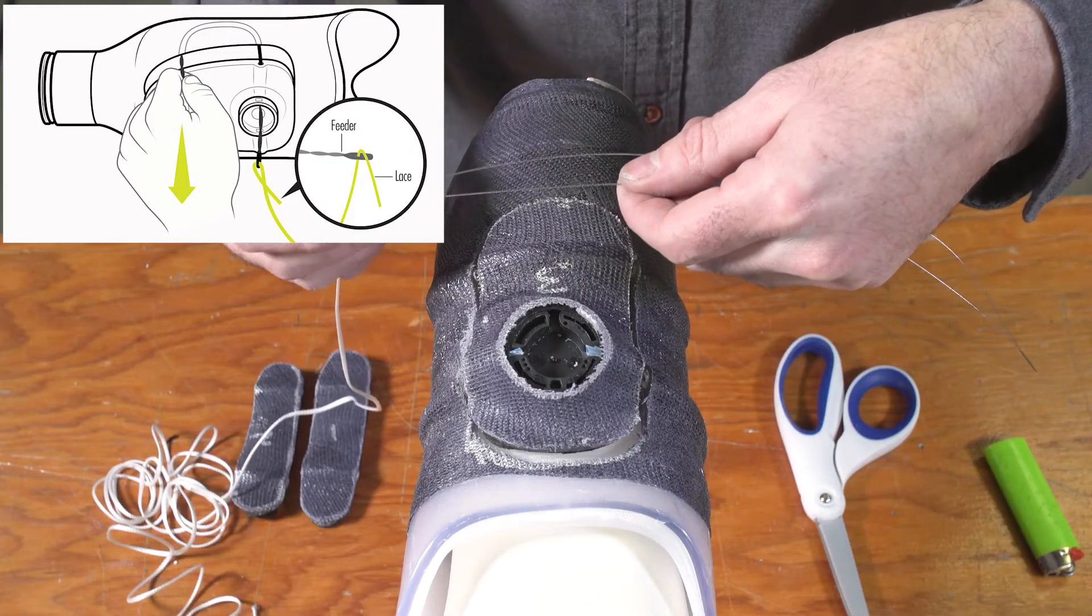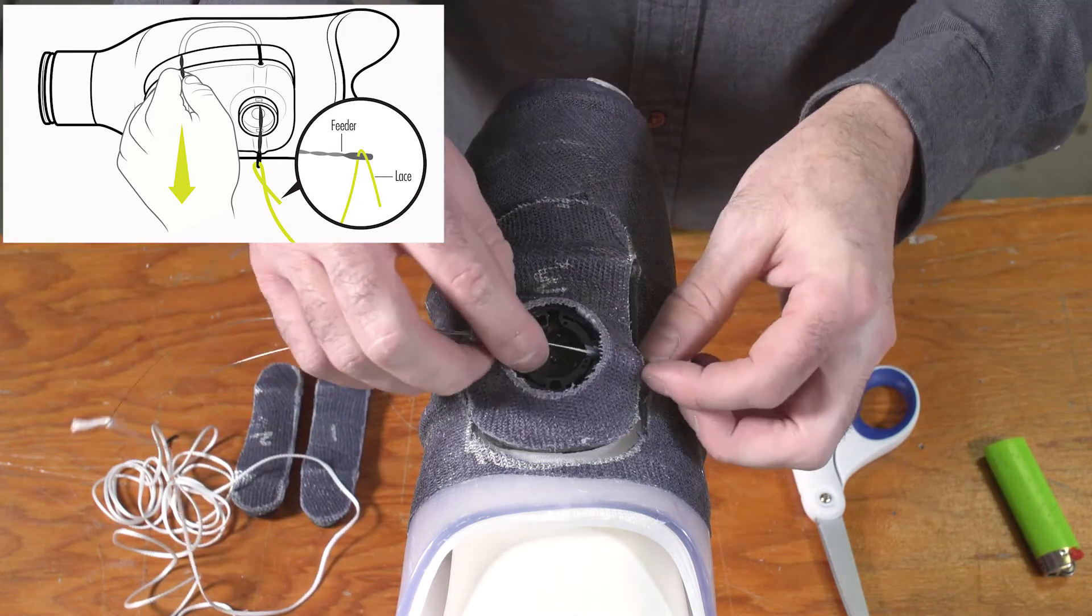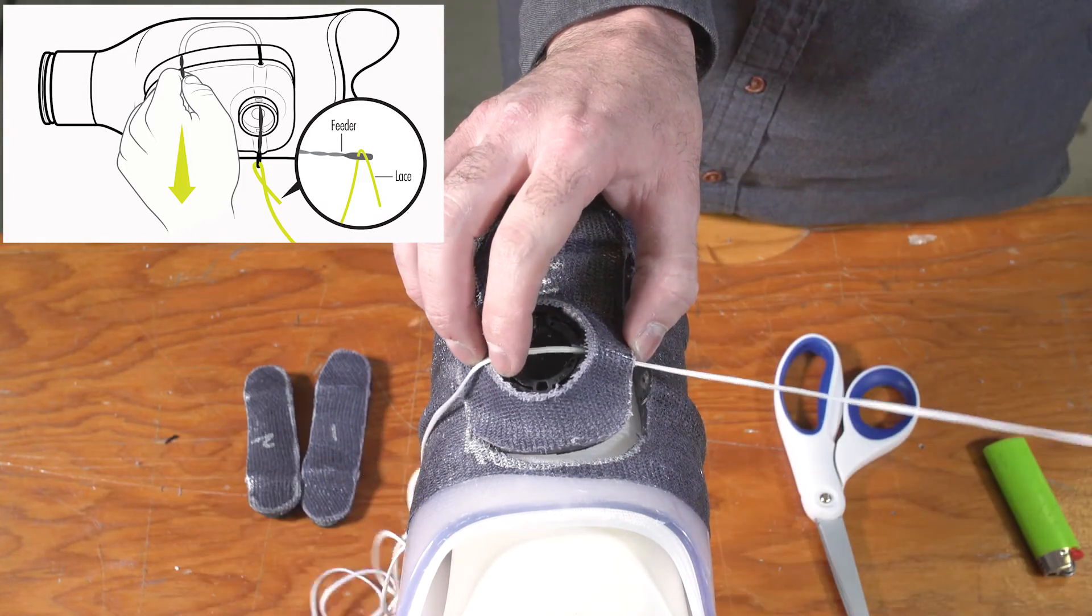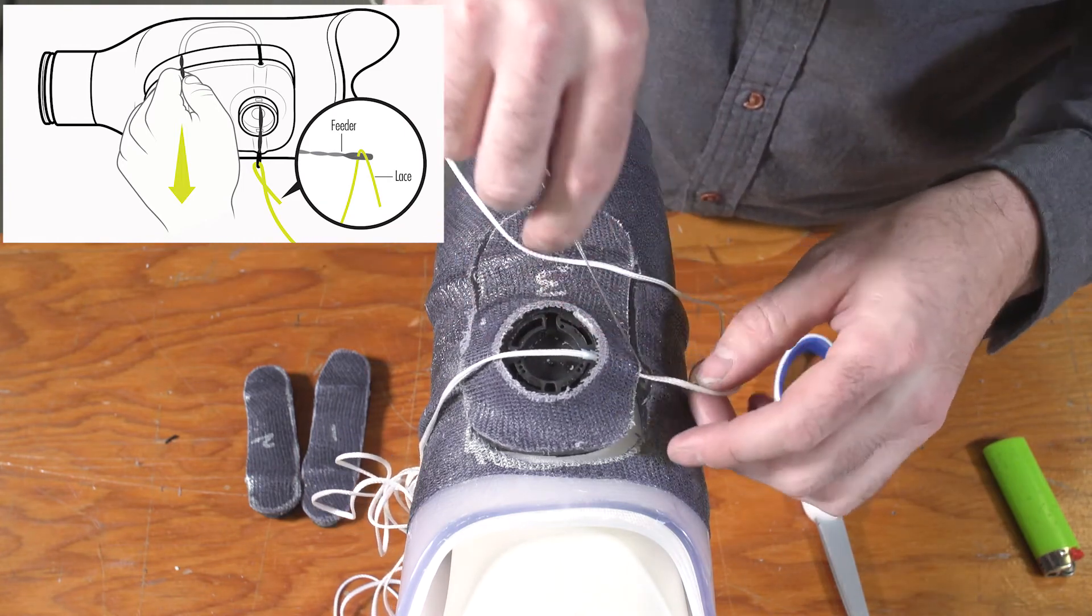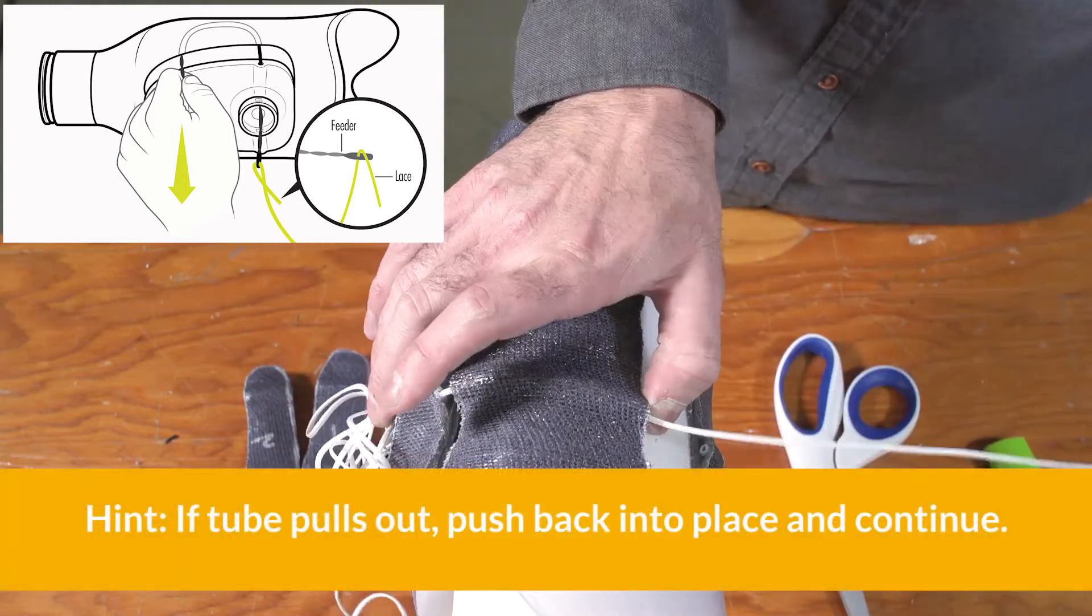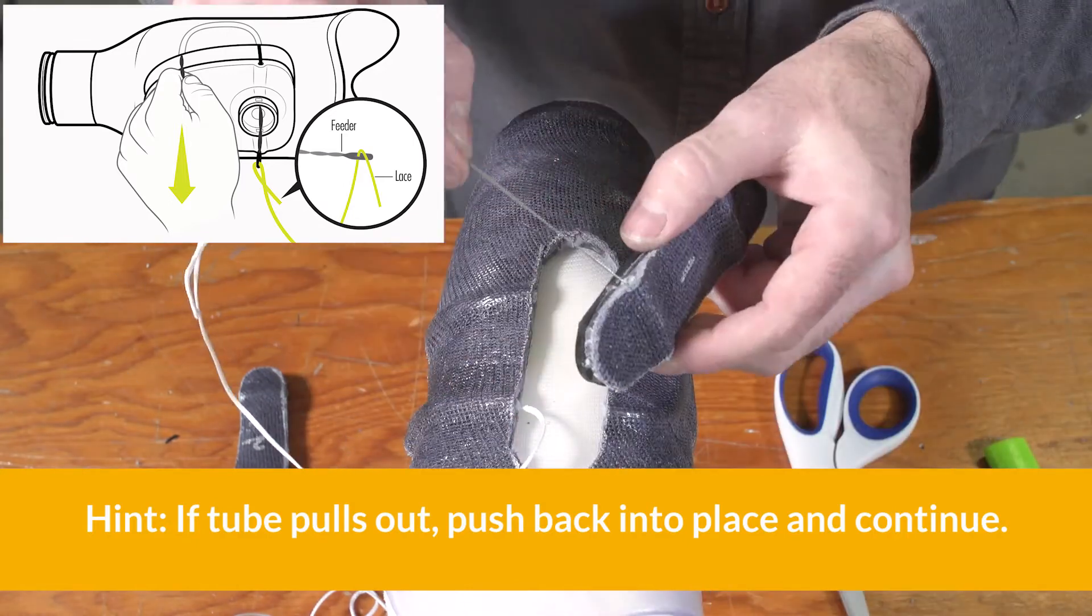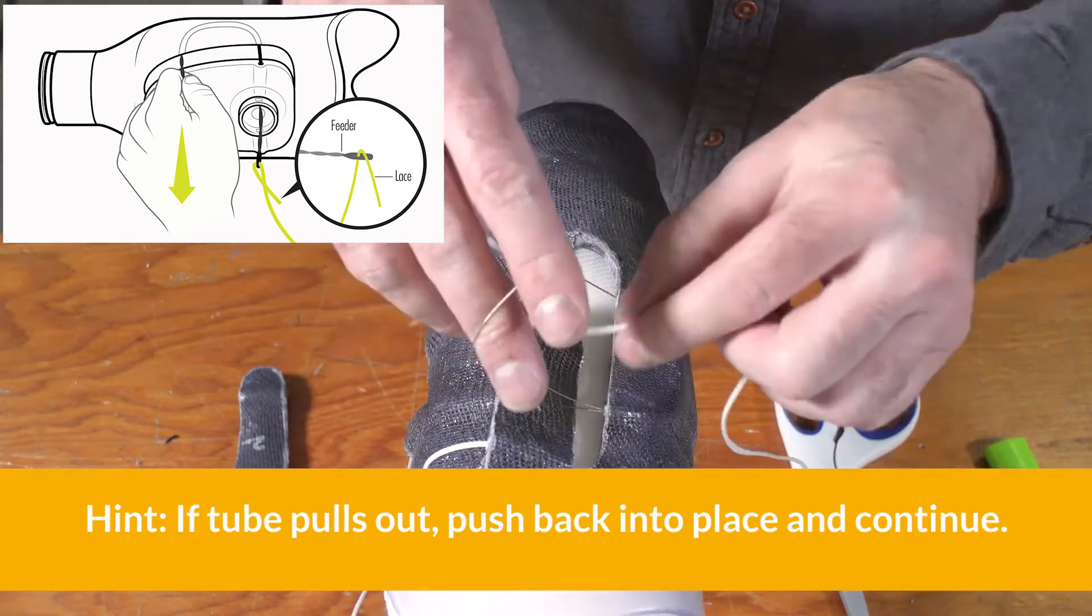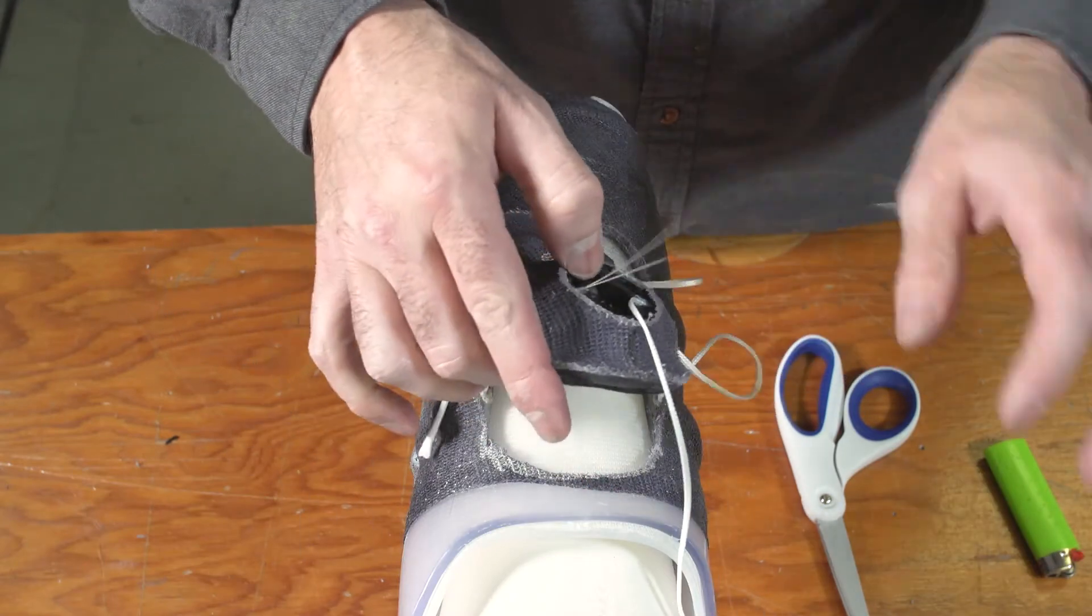Now, thread the lace. Using the wire lacing tool, start from the inside of the dial base and thread the lace through one side of the tubing. At each panel, exit the frame, then enter the corresponding tube crossing the panel. Then enter the frame again. Continue until you've laced each panel and threaded the lace back into the dial base.